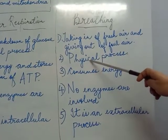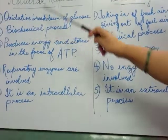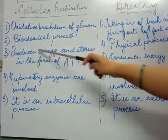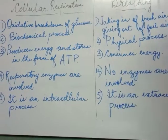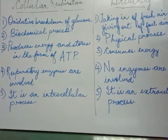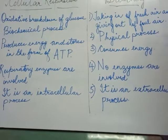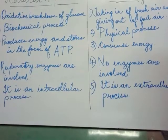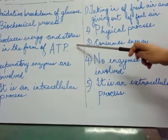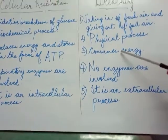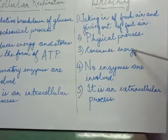Breathing is a simple physical process. Point number three: cellular respiration produces energy and stores it in the form of ATP. A huge amount of energy is released during cellular respiration and stored as ATP — adenosine triphosphate. In the process of breathing, energy is consumed — breathing needs energy.